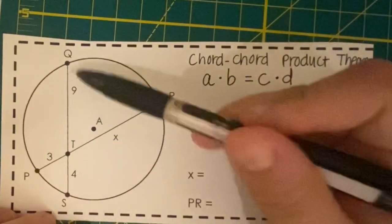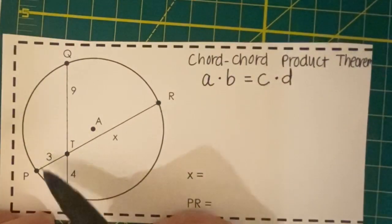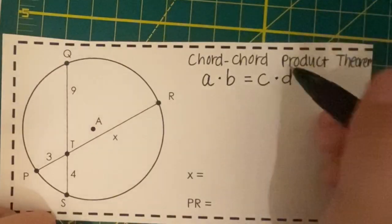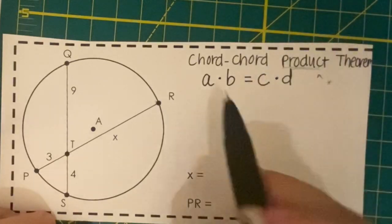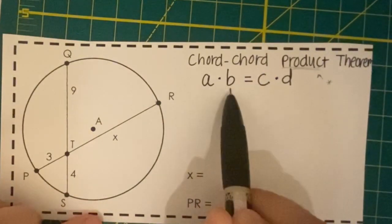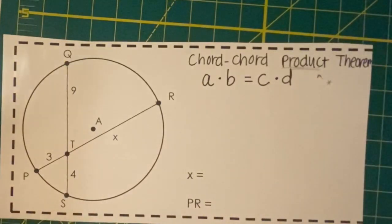This involves two intersecting chords, which are segments that touch the circumference of the circle twice, and product here gives us a hint that we're going to need to multiply. So the actual chord-chord product theorem says A times B equals C times D. What does that mean? What are those segments?